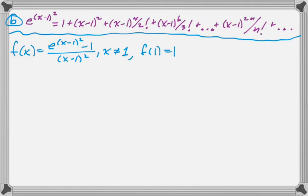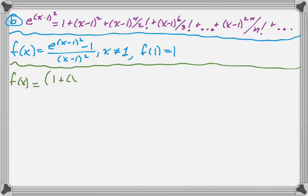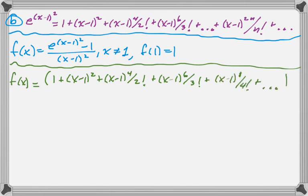So what I want to do is just really replace that e to the quantity x minus 1 squared with the series from above that we found in part a. And you'll notice something kind of neat happens here. The problem is designed this way. So fill it in to a couple terms.